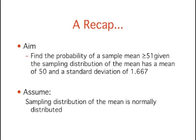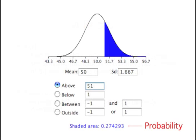To recap, we want to know the probability of obtaining a sample mean of 51 or more when the sampling distribution of the mean has a mean of 50 and a standard deviation of 1.667. To do this, we need to assume that the sampling distribution of the mean is normally distributed. We can use the normal distribution calculator to find the probability. Type in the mean of 50 and the standard deviation of 1.667. The calculator then works out the area under the curve above 51. The probability of obtaining a sample mean of 51 or larger is 0.274, displayed as the shaded area under the curve.